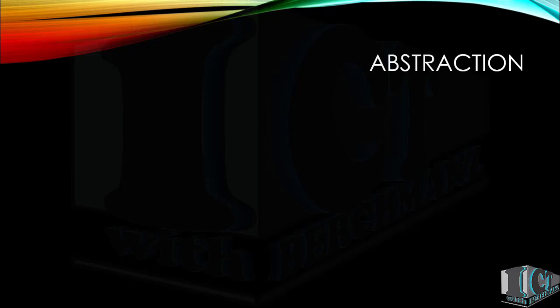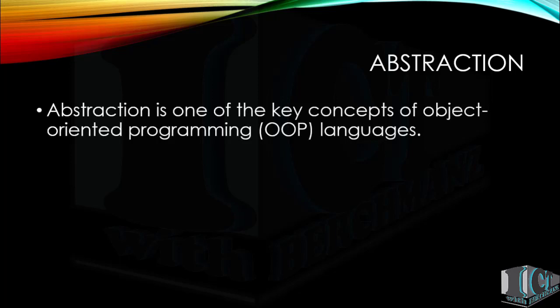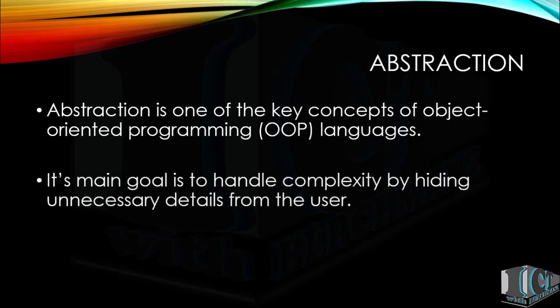The first thing we should know about computational thinking skills is abstraction. Abstraction is one of the key concepts of object-oriented programming languages. Its main goal is to handle complexity by hiding unnecessary details from the user — showing only the simple parts while hiding all the complex processes happening in the programming language.